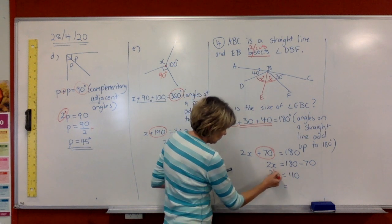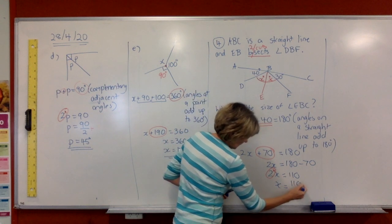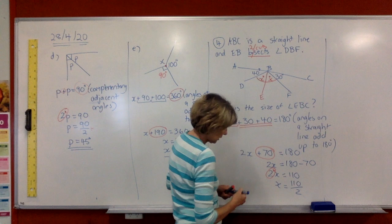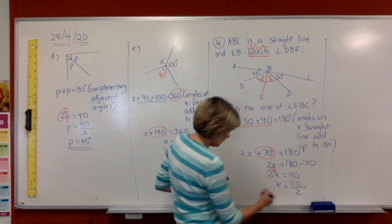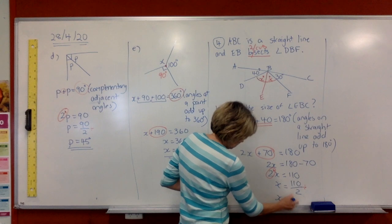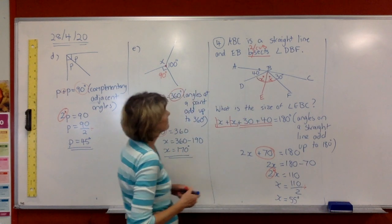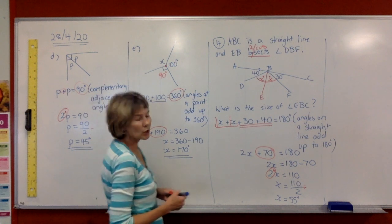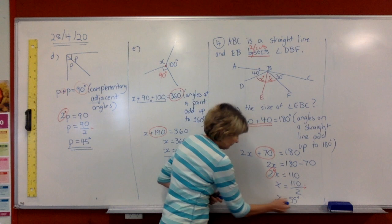Then get rid of the times 2 by dividing by 2 on the other side. Put it in your fraction key on your calculator. And you'll get 55 degrees. Now, that's not actually what the question asked for, but it is handy to know what that X is.